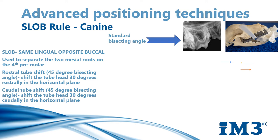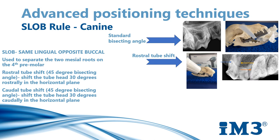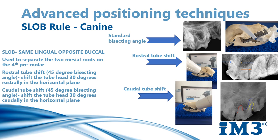When the tube head is shifted in a rostral direction, pointing towards the back of the head, the distal root of the fourth premolar is often superimposed over the first molar, as you can see on the image below. The orange arrow points to the distal root, the yellow to the buccal root, and the blue arrow is pointing to the palatal root. When the tube head is shifted caudally, so towards the nose, the distal root is well visualised away from the first molar. The red root is the distal, the blue is the palatal, and the yellow is the buccal tooth root.